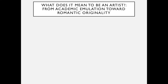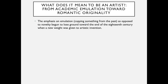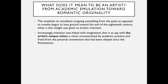What does it mean to be an artist — from academic emulation toward romantic originality? The emphasis on emulation, which is copying something from the past as opposed to novelty, began to lose ground toward the end of the 18th century when new weight was given to artistic invention. Increasingly, invention was linked with imagination — that is, with the artist's unique vision, unconstrained by academic practice and freed from pictorial conventions obeyed since the Renaissance. This new attitude underlies the aesthetic interests of romanticism: a unique vision.